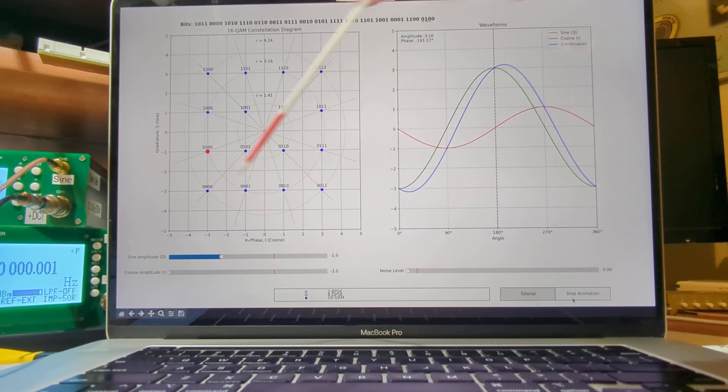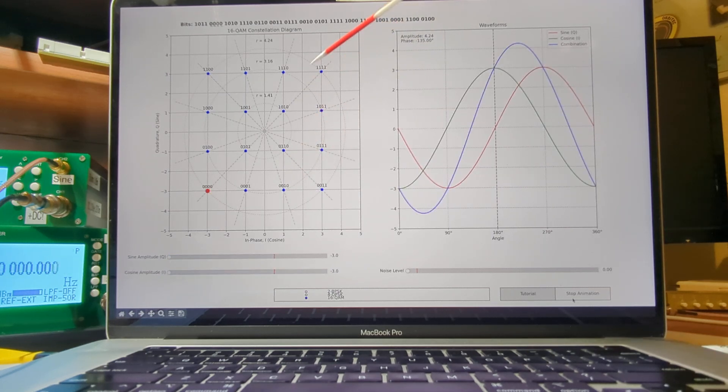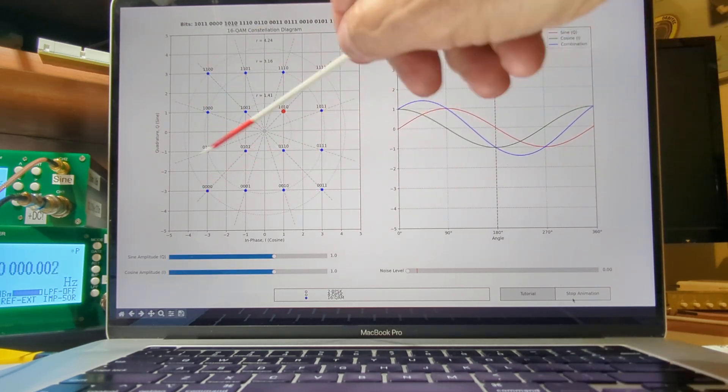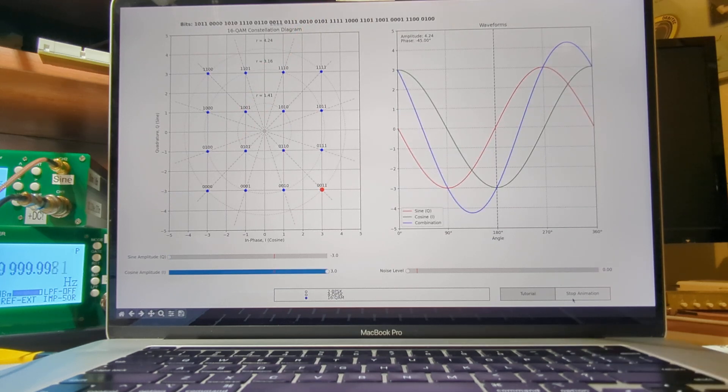And so in this case, I'm showing the bit patterns here. There's a 0, 0, 0, 0 down at the lower left, and then 1, 1, 1, 1 in the upper right. And then they just change as you increase as you go this way in the diagram. That's a predefined, arranged mapping between the bit pattern and the amplitude and phase.